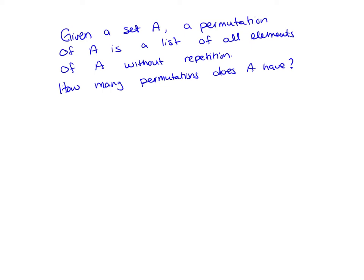So we're going to change gears here a little bit, and we're going to think about sets. So I'm going to have a set A. So for example, maybe I have the set 1, 2, 3. And now a permutation of A is just going to be a list of all of the elements of A without repetition.